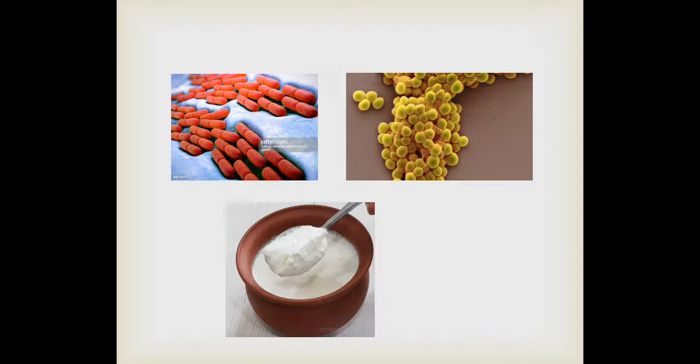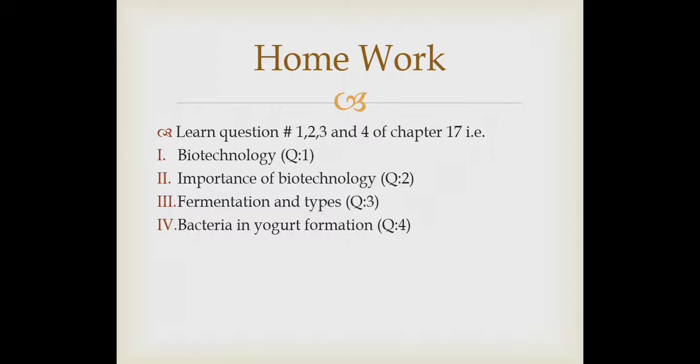These are the bacteria involved: the yellow one you can see is Streptococcus, while the reddish one is Lactobacillus, which are used in the formation of yogurt. Dear students, your today's homework is to learn questions number one through four from chapter number 17 in your notes. You will learn this chapter properly and I will take a test from you on these questions. Thank you so much, stay blessed.